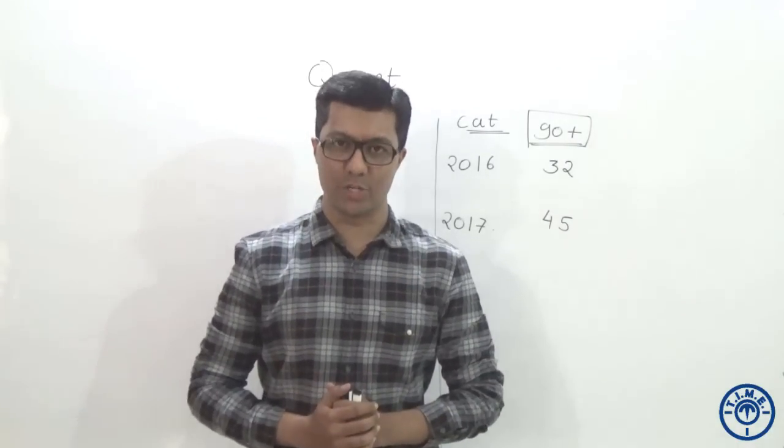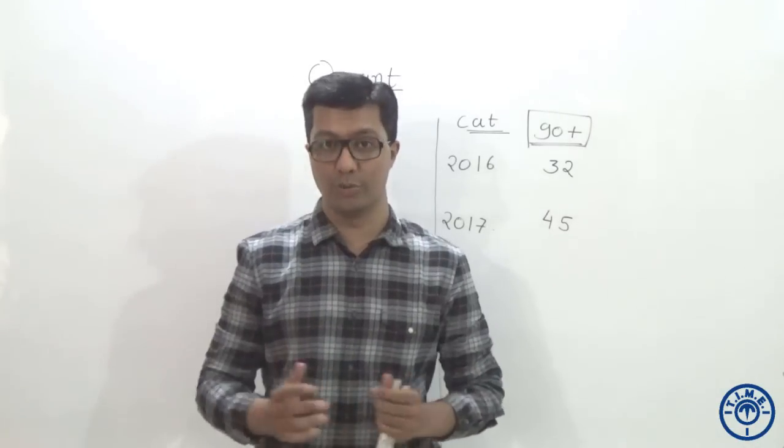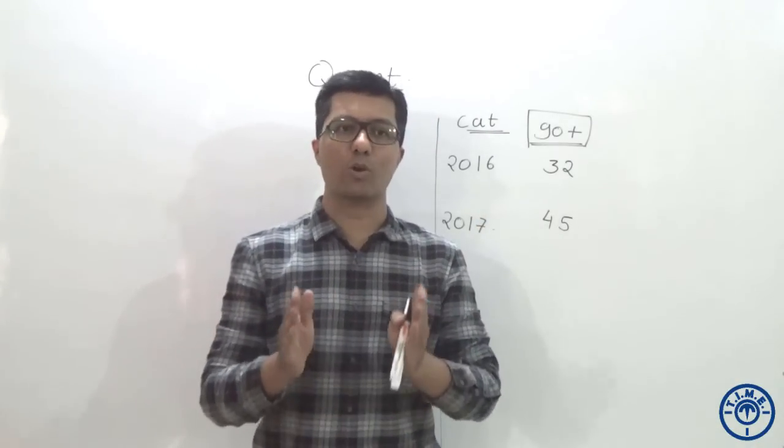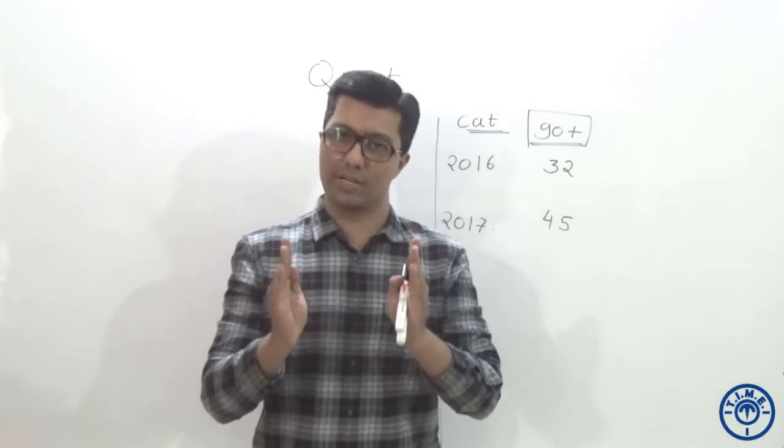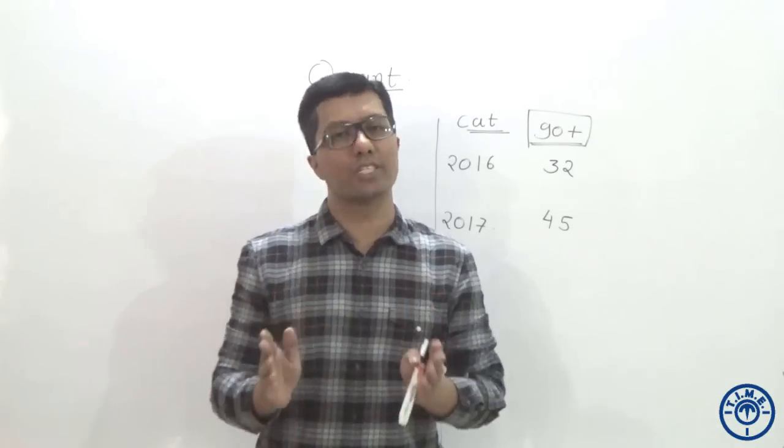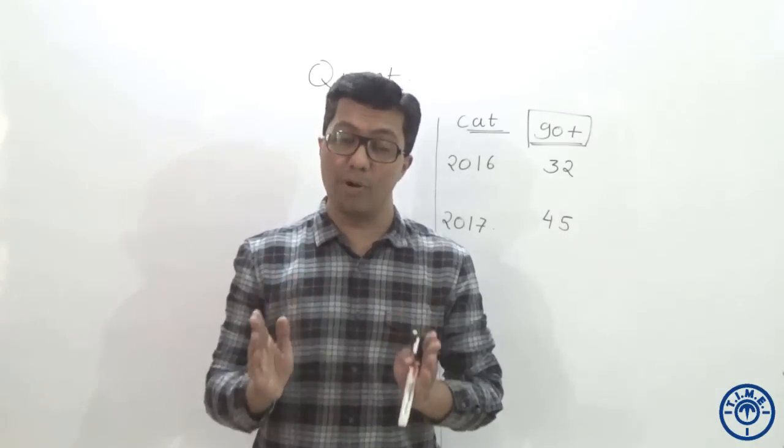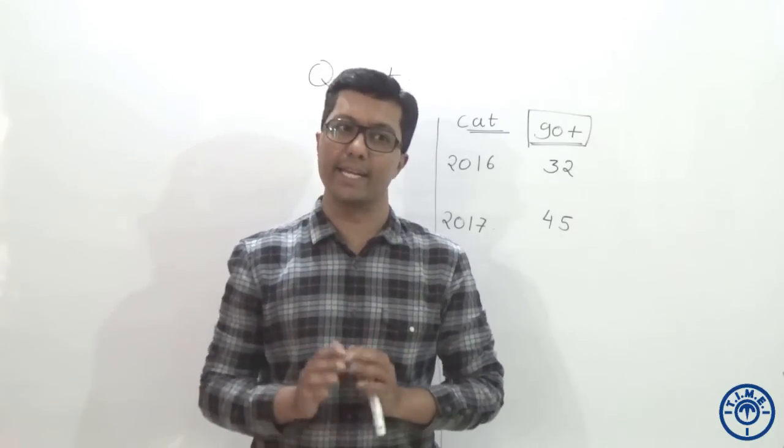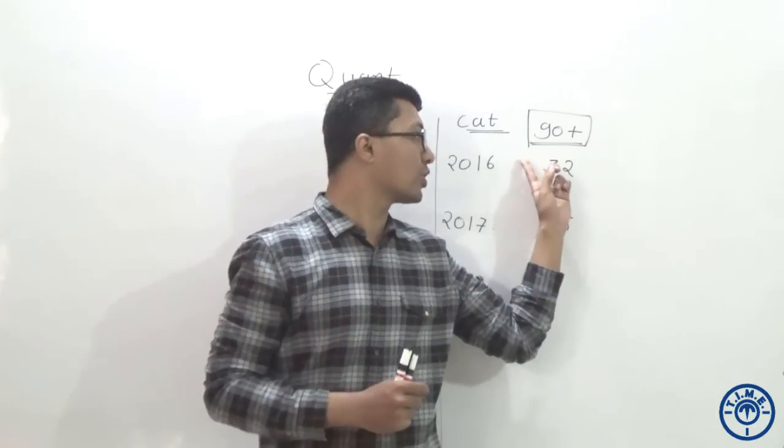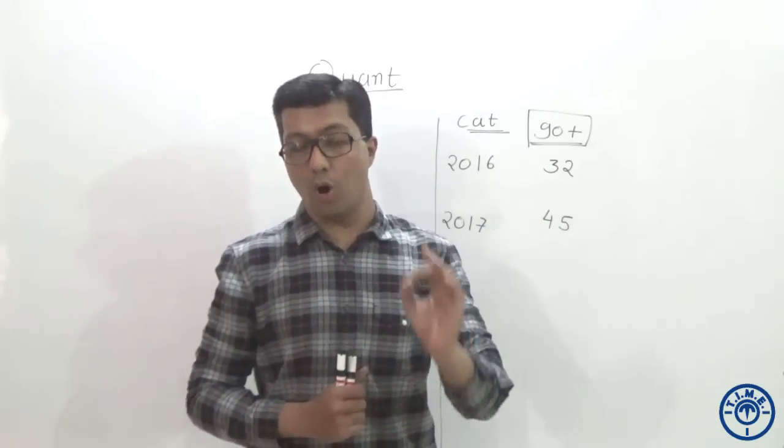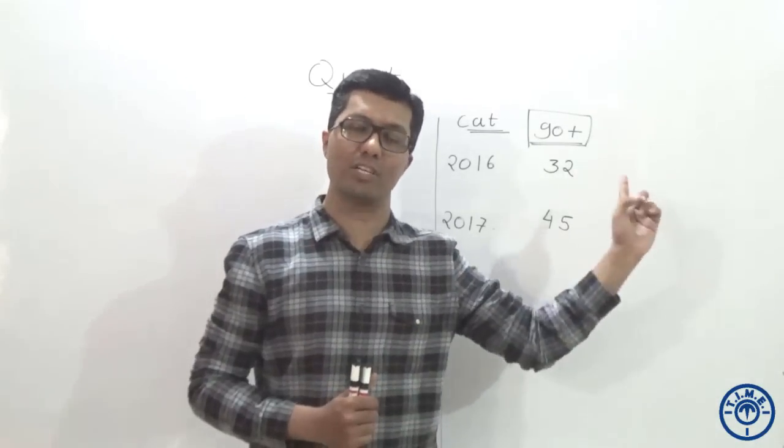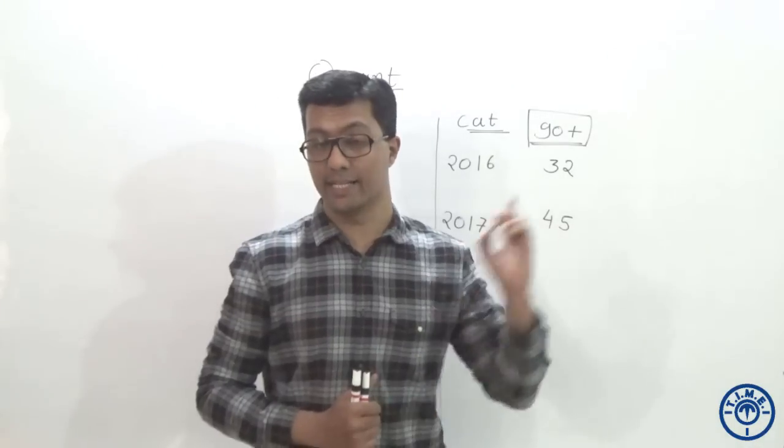When we are talking about the CAT examination and especially the third section that is Quantitative Aptitude, let us talk about few facts and figures. Our target is good college and to get a good college we must clear the cutoff. 90 above percentile will be considered very good in any examination. To get above 90 percentile in CAT, looking at 2016 and 2017, all that was required in Quantitative Aptitude was 32 marks and 45 marks. That means 11 correct questions and 15 correct questions in the respective examinations.